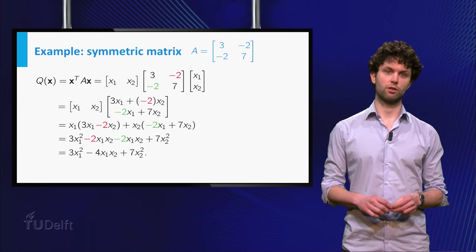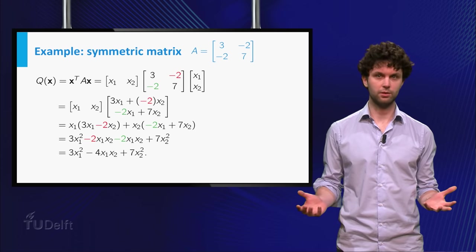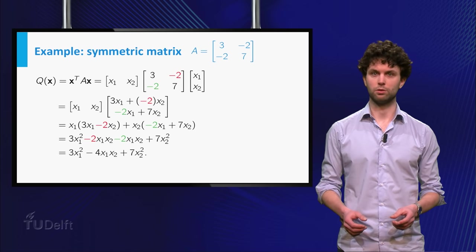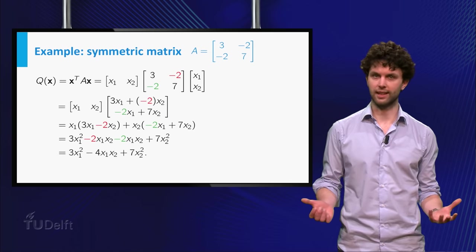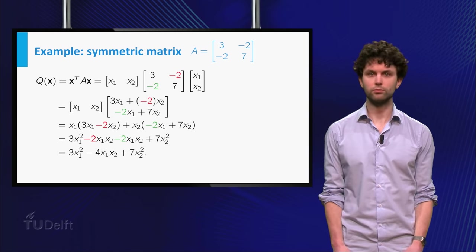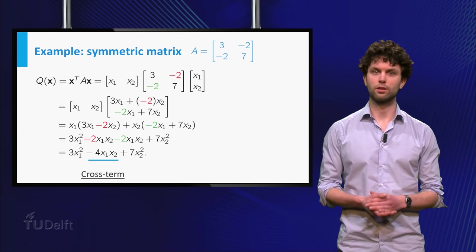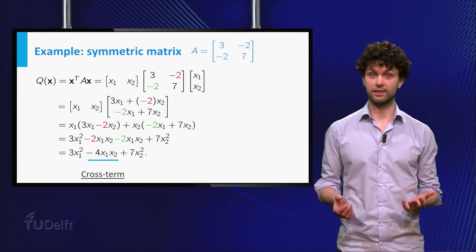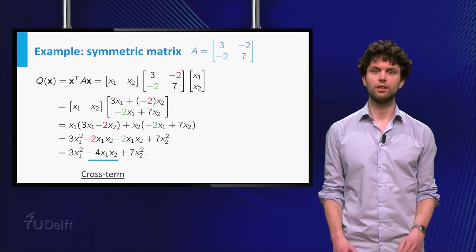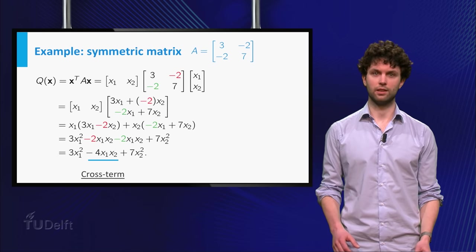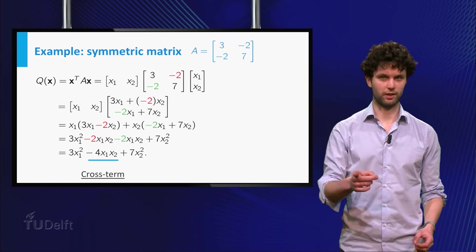Note that the occurrence of minus 4x₁x₂ in the final form is due to the minus 2 entries off the diagonal in the matrix A. Such a term, which involves two coordinates, is called a cross-term. Note that the previous example had no cross-term. This was caused by the fact that A then was a diagonal matrix.